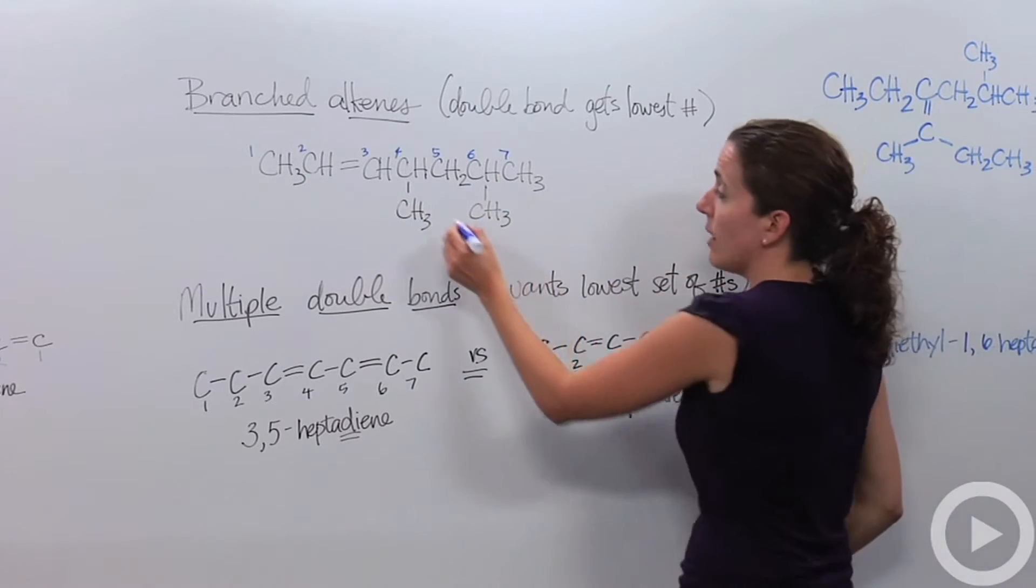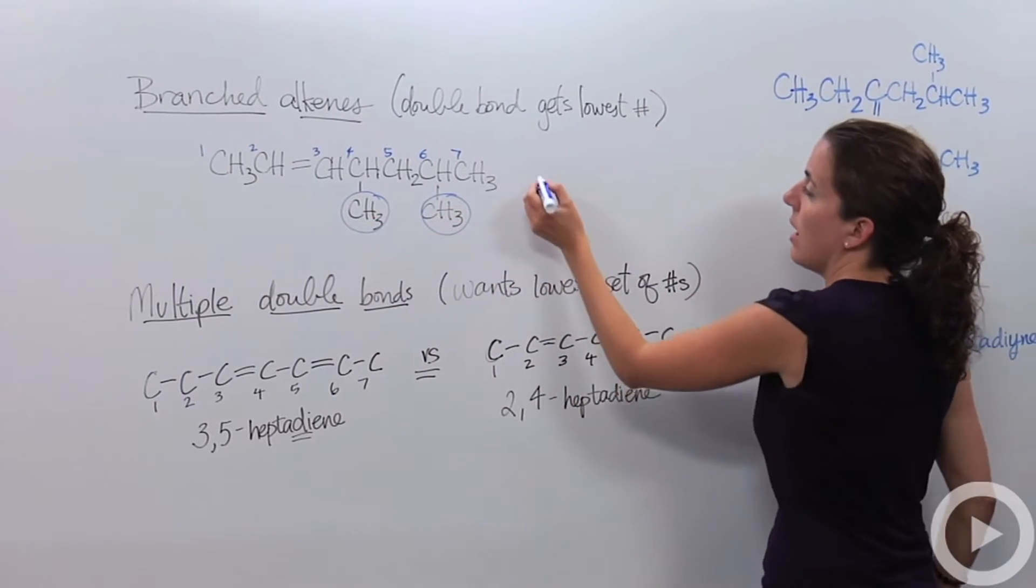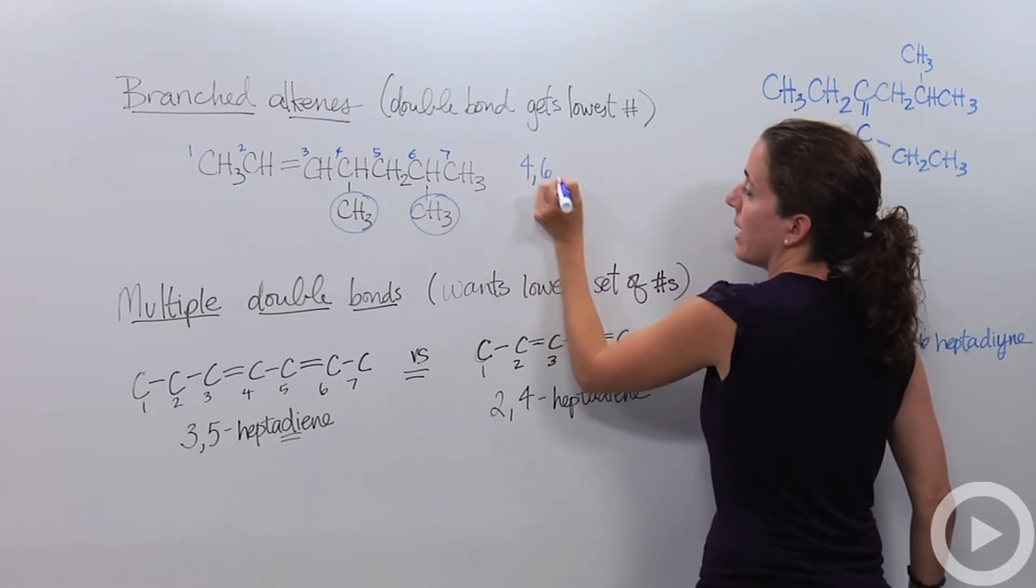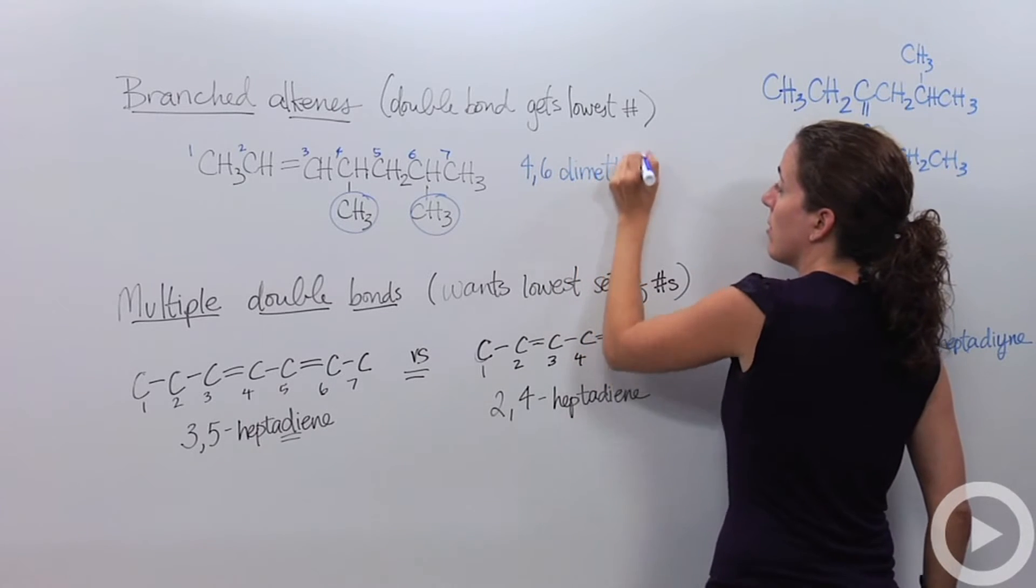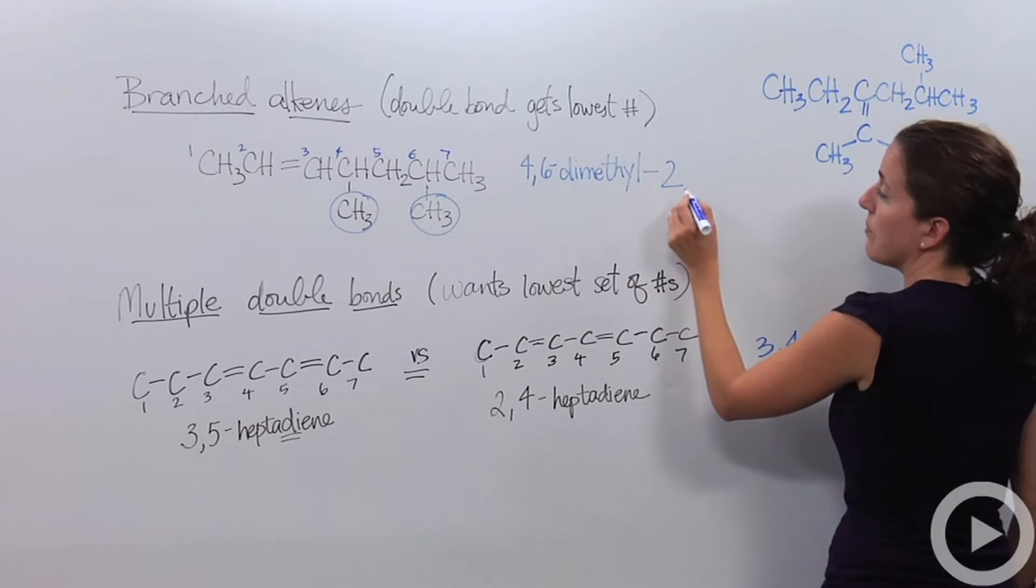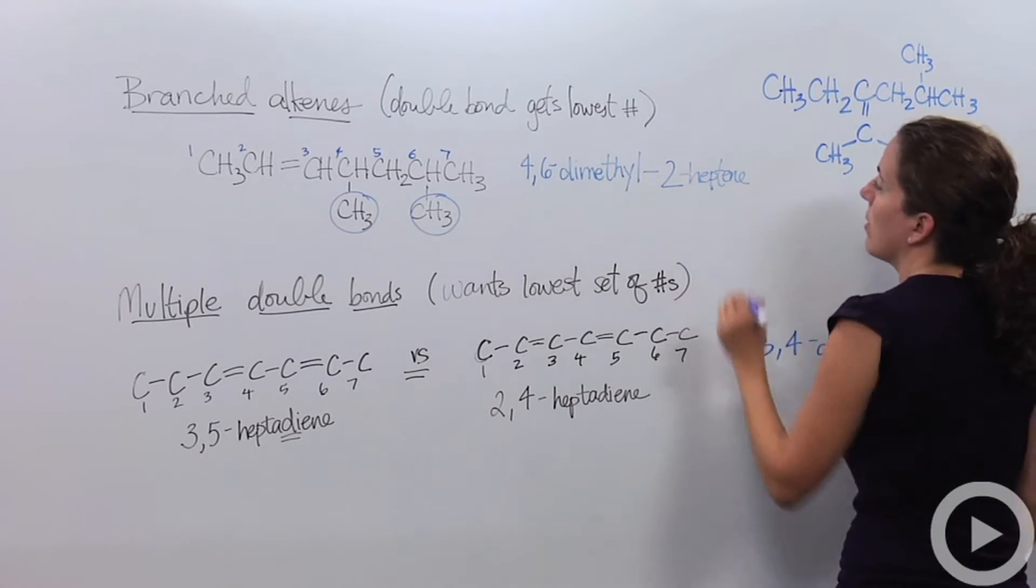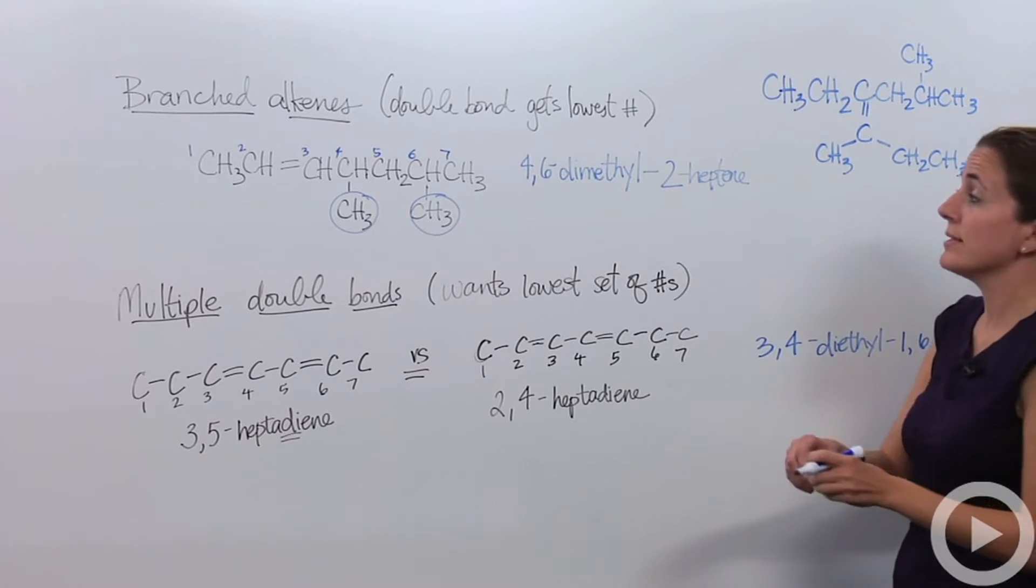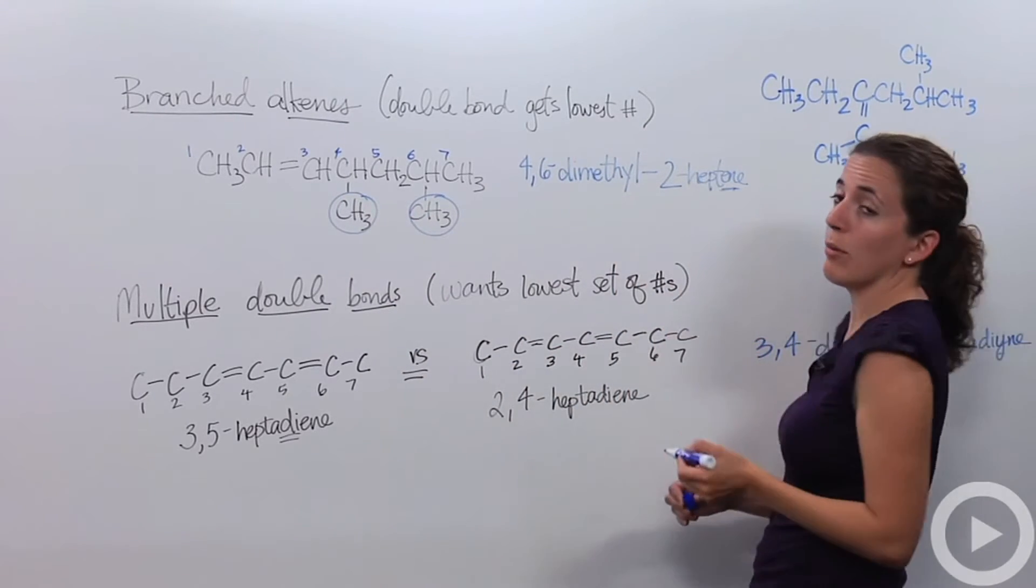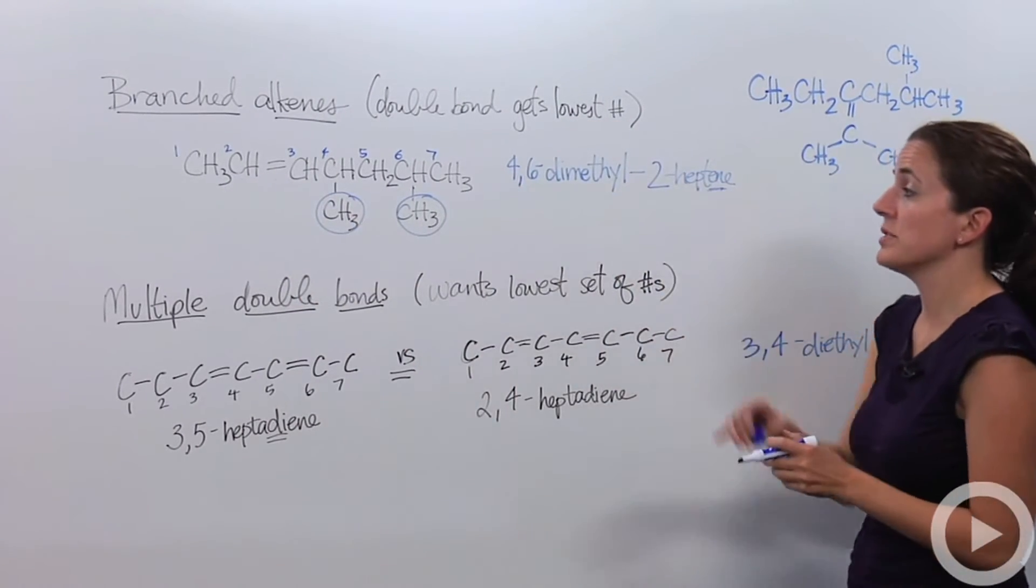So our numbering is going to be, our double bond is going to be between the second and the third carbon. Now we have some branching going on. These are methyl groups. So because there are two of them, we're going to name this, it's on the sixth and the fourth carbon. So we're going to name it 4,6-dimethyl-2-heptene. This tells me that the methyls are in the fourth and the sixth carbon and the double bond, heptene, tells me it's a double bonded carbon. It's in the second location, between the second and third. So this tells me all the directions I need to know.